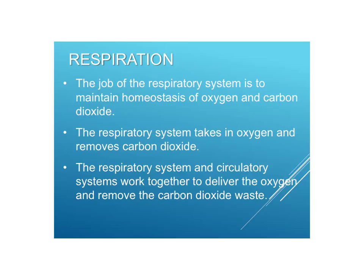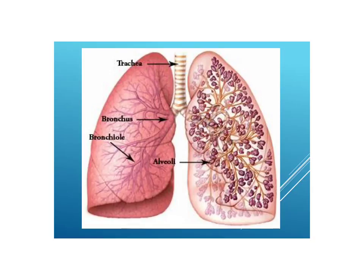The job of the respiratory system is to maintain homeostasis of oxygen and carbon dioxide in the blood and available to the cells. The respiratory system takes in oxygen and removes carbon dioxide. The respiratory and circulatory systems work closely together to deliver that oxygen and remove the carbon dioxide waste. Here's an overview of the human respiratory system: we have the trachea coming down from the mouth, branching into two main branches called bronchi, then into bronchioles, and eventually to little sacs called alveoli where gas exchange takes place.